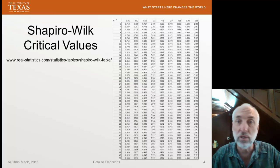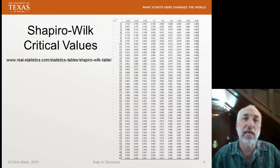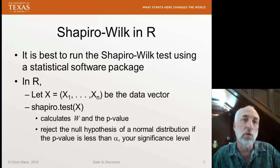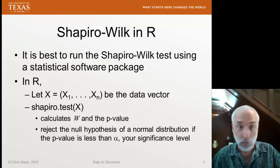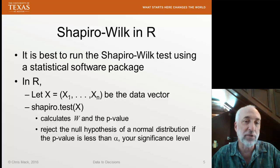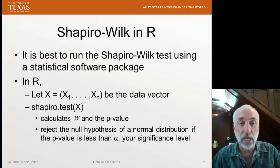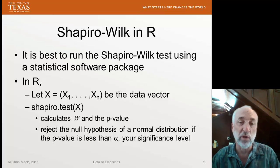We also have tables that show us the critical values of that statistic W. But the reality is, we never do these calculations by hand — we always let some software package generate our statistic and p-values for us. We're going to use R in this class. Excel doesn't have a Shapiro-Wilk test built into it. In R, we assign a set of data to some vector X — we don't have to sort them in any way, the software does that for us. We run one command, shapiro.test(X), and it will calculate statistic W and the p-value. Then we compare the p-value to our significance level alpha, and we reject the null hypothesis that the distribution is normal if the p-value is less than alpha. For example, alpha might be 0.01 or 0.05.